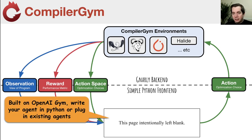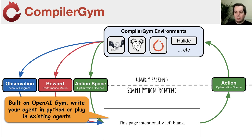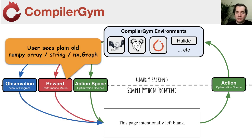This is built on OpenAI Gym, a very popular library for exposing all kinds of problems for reinforcement learning. It's very flexible — a Python library that lets you write your agent in Python, the lingua franca for machine learning. Because it has a straightforward interface, you can plug in libraries and agents that others have already implemented. We operate on the principle of least surprise: you get Python data types. If you're dealing with numeric feature vectors you get numpy arrays, if you're dealing with graphs you get NetworkX graphs. We try to make it as straightforward as possible.